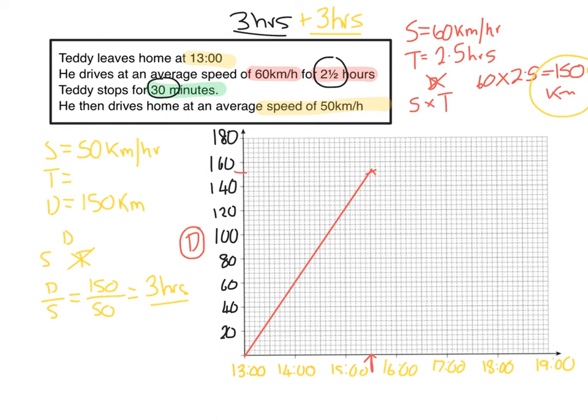Okay, he stops for 30 minutes. So I'm going to do that in green. So he stops between 3:30 and 4 because that's these bits here. So we're currently here and he stops half an hour. I can draw that one on. And then he drives home at an average speed of 50 kilometers per hour, and we've worked that out that that takes 3 hours. So from 4, it's going to take until 7 o'clock. And we're done.